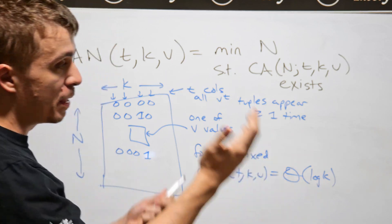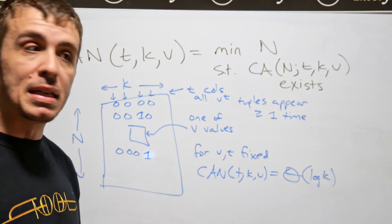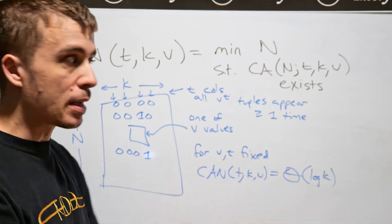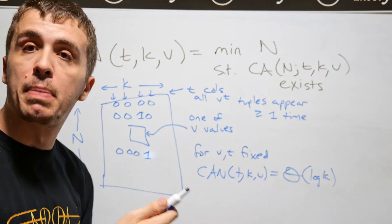then this covering array number quantity CAN of t k v is going to be some constant times log k, asymptotically at least. And so if I have, let's say, a billion columns,